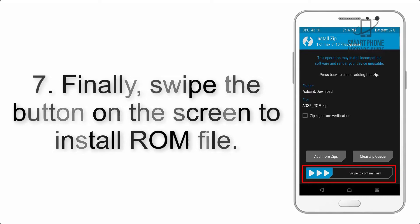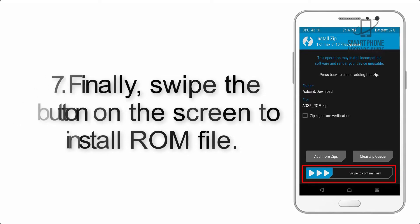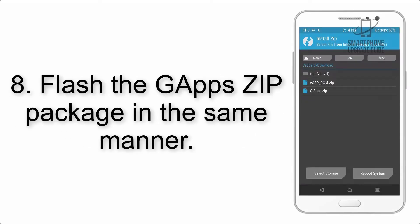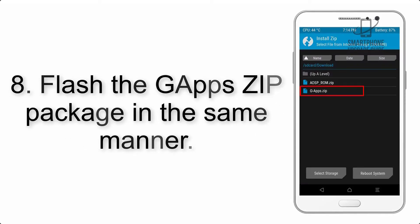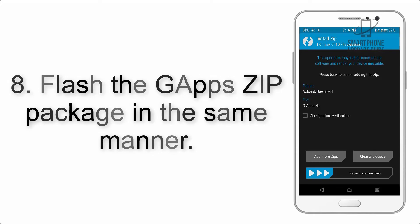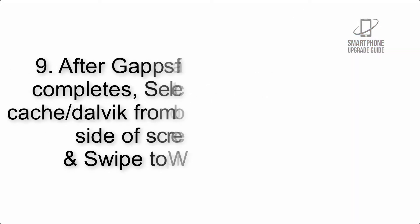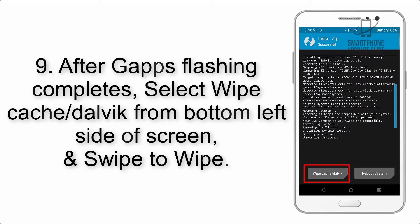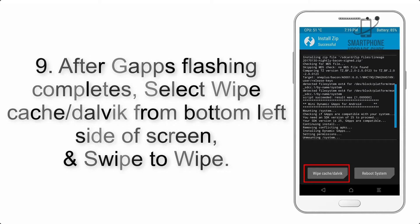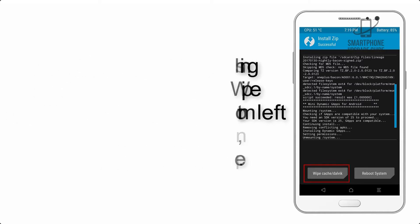Step 7: Swipe the button on the screen to install the ROM file. Step 8: Flash the GApps zip package in the same manner. Step 9: After GApps flashing completes, select Wipe Cache and Dalvik from the bottom left side of the screen and swipe to wipe.